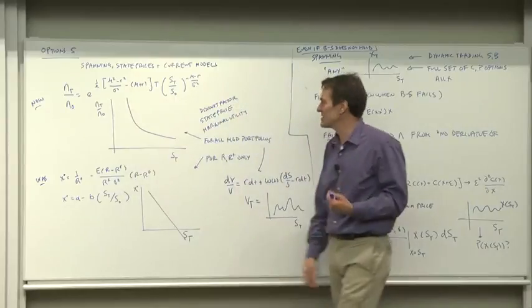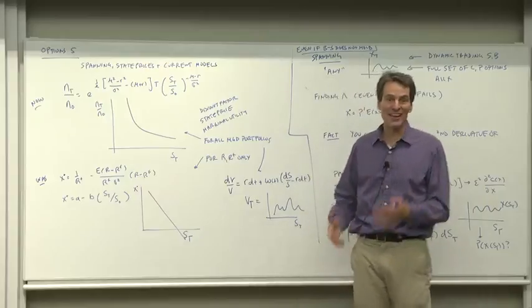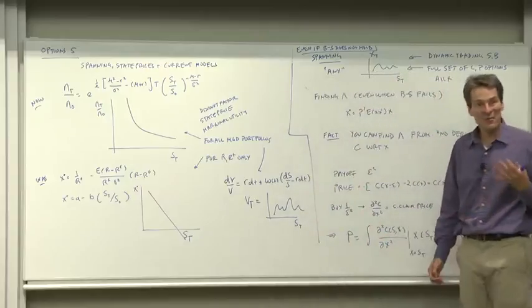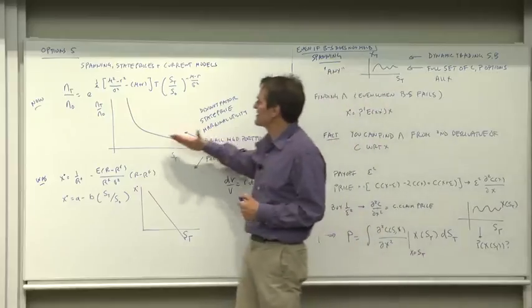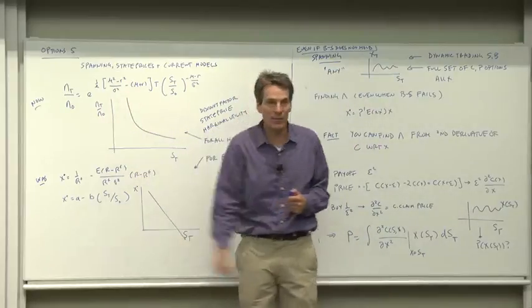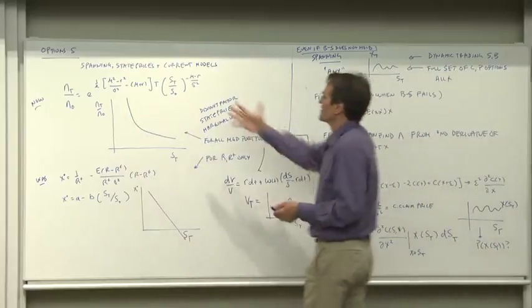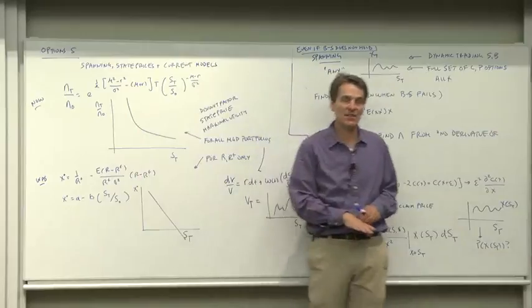So that's telling us the discount factor, the state price, the marginal utility, the X star that we've been looking at all along. It tells us what does marginal utility look like, how hungry are people in different states of nature in order to generate the stock prices and means that we see.